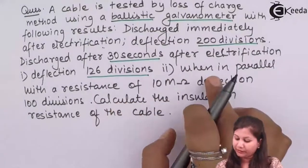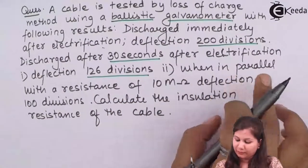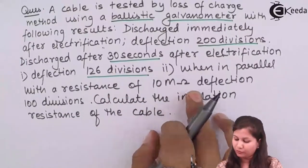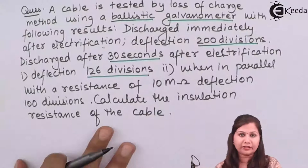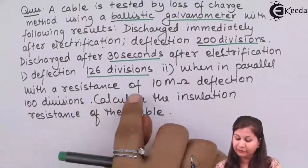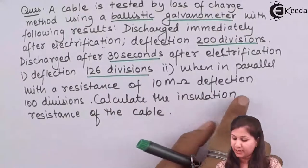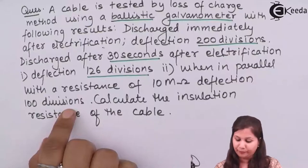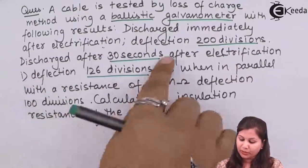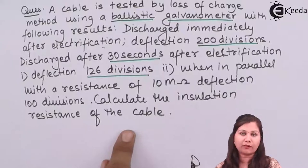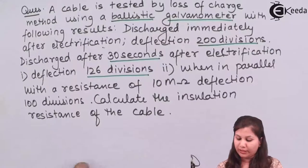When the unknown insulation resistance is in parallel with a resistance of 10 mega ohm, the deflection on the galvanometer is 100 divisions. Using all this information, we have to calculate the insulation resistance of the cable.